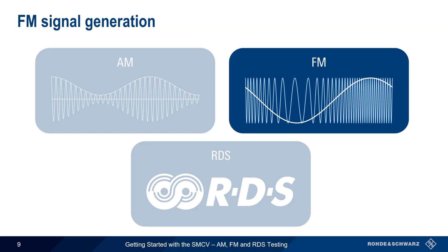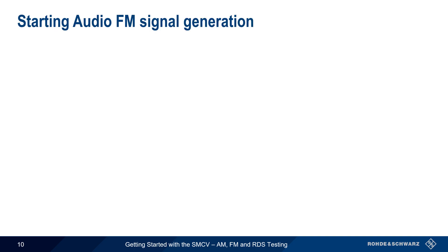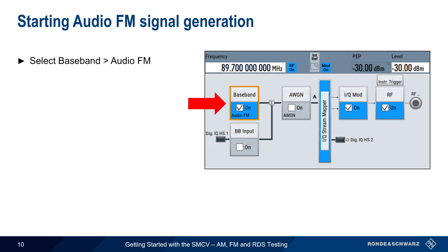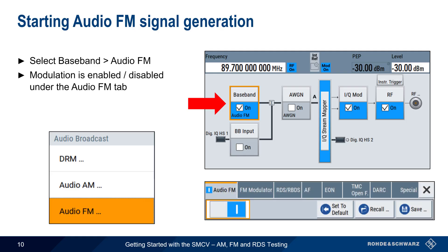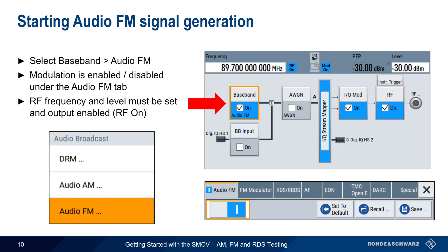Next, we'll look at configuring analog FM modulation, which is similar in many ways to how analog AM modulation is configured. As with AM, analog FM modulation is set by going to the Baseband block and selecting Audio FM from the menu. Modulation is enabled or disabled from the Audio FM tab. Remember that frequency and level must also be configured, and RF output must be enabled as well.